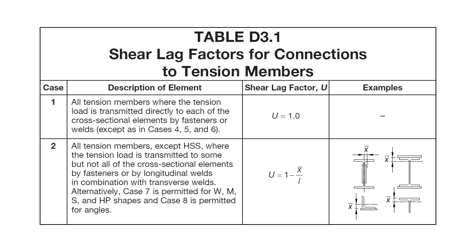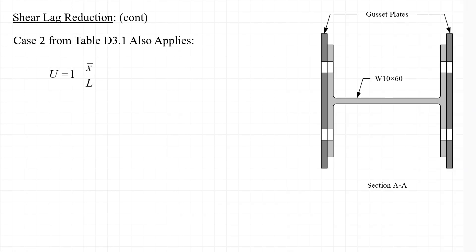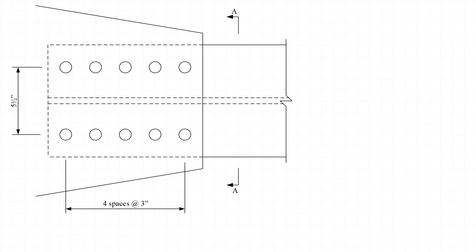Now considering Case 2 from Table D3.1, U would be taken as 1 minus x-bar over L. In this equation, x-bar is the connection eccentricity and L is the length of the joint at the end of the member. Looking at the joint length, L is the distance from the first bolt to the last bolt in the joint. Taking the bolt spacing as 3 inches center to center, the total length is L equals 4 times 3 inches, or 12 inches.